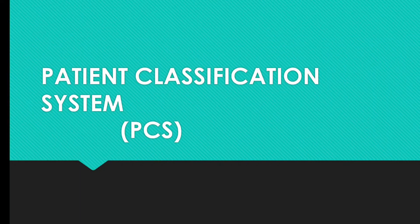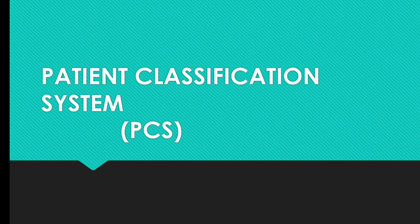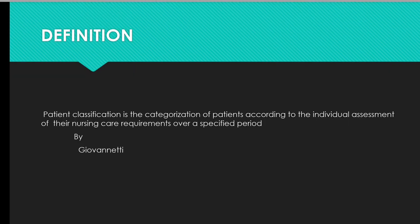We will cover another topic: the Patient Classification System. This is for early BSN students, dealing with the basic aspects of patient classification. We classify patients on the basis of their care needs for the calculation or estimation of the nurse-patient ratio. Patient classification is the categorization of patients according to the individual assessment of their nursing care requirements over a specified period.